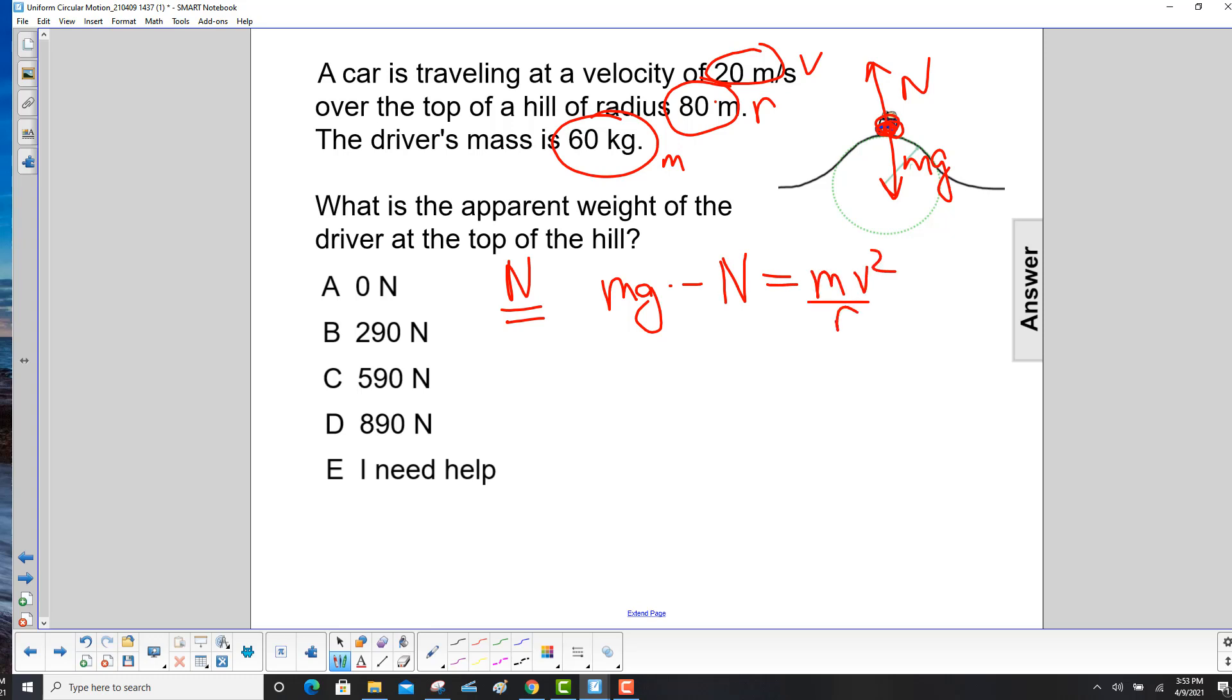We isolate the normal force, and the normal force now will equal mg minus mv squared over R, which is M. We take the M out, so we only have to multiply it once. V squared over R.